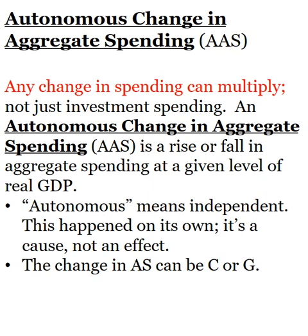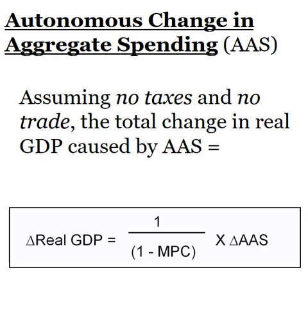So that's the autonomous part. The types of spending it can apply to are C, I, and G. Aggregate — that's a review — means overall or total. Now we know what AAS is: autonomous aggregate spending. We're going to use that and plug it into the equation we already had. The overall change in real GDP is the multiplier times the spending. The spending doesn't just have to be investment spending — AAS could be consumer spending, investment spending, or government spending. Any of those things can create this multiplier effect.